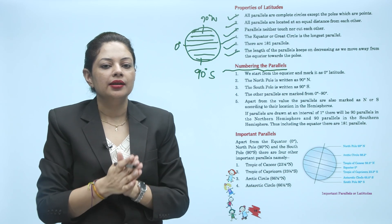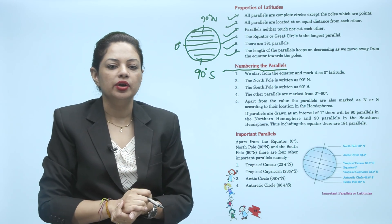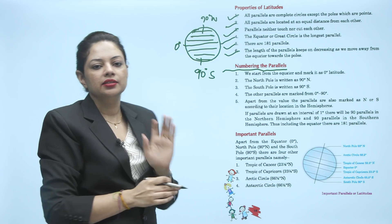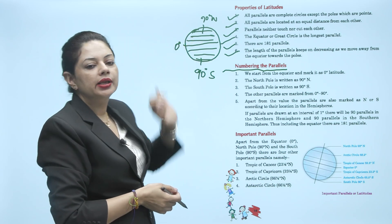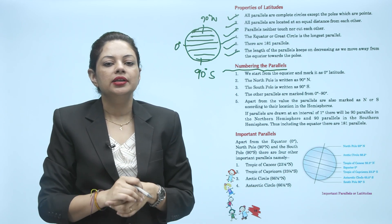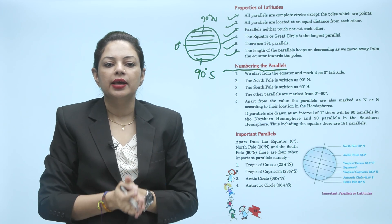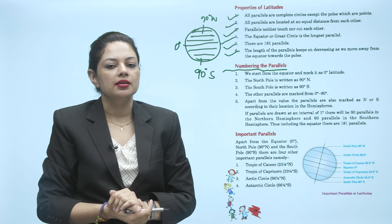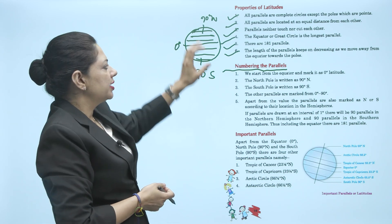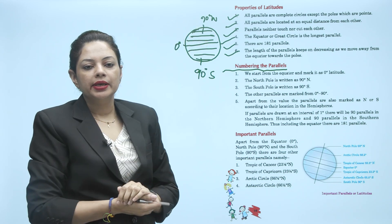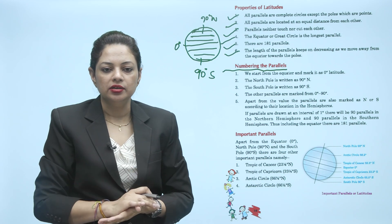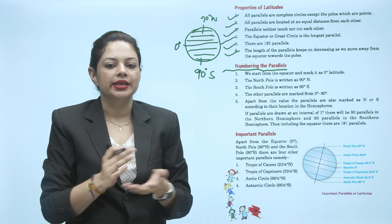Apart from the value, the parallels are also marked as N or S according to their location in the hemisphere. अगर northern hemisphere की बात करेंगे तो हर एक numbering के साथ N आएगा, और southern hemisphere की parallel की बात करेंगे तो S आएगा. If parallels are drawn at an interval of 1 degree, there will be 90 parallels in the northern hemisphere and 90 parallels in the southern hemisphere. Thus, including the equator, there are 181 parallels.